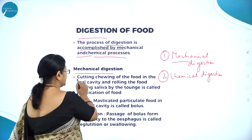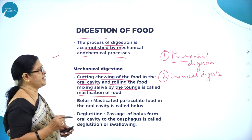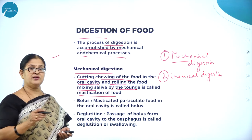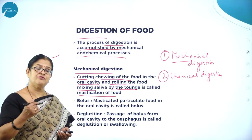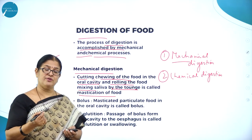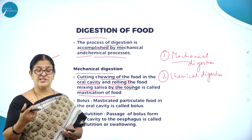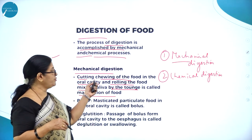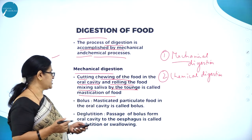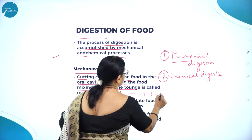Mechanical digestion involves cutting and chewing of food in the oral cavity and rolling the food — mixing it with saliva by the tongue — which is called mastication. We should chew food properly before swallowing because digestion is easier with well-chewed soft food; just swallowing delays the process. Bolus is the masticated, particulate food in the oral cavity — a semi-solid food containing one-fourth carbohydrate, full protein, and full lipid if present in the diet.